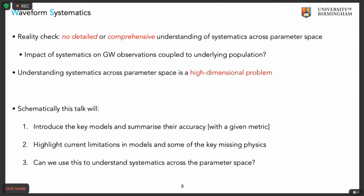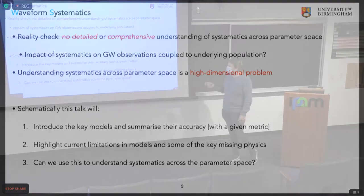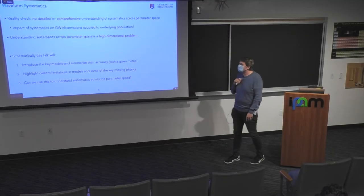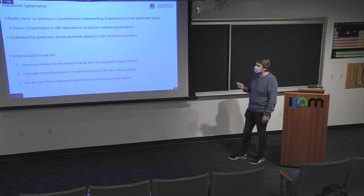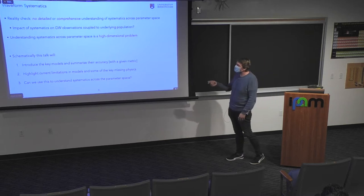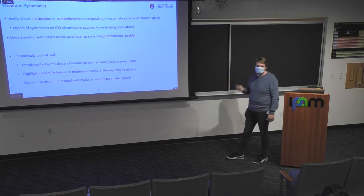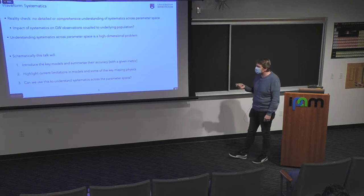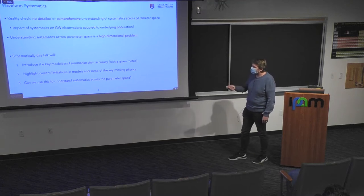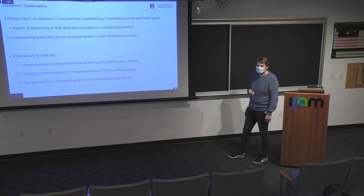Both the intrinsic parameters and the extrinsic parameters need to be considered, and the binary geometry is very relevant. Schematically, I will introduce some key waveform models, summarize the current accuracy with a particular metric, and hopefully convince you that current generation waveform models are comparable in their performance. I will highlight current limitations in the physics we include, what missing physics there is, and where we think the field is going forward, and give an exercise in understanding systematics across the parameter space.